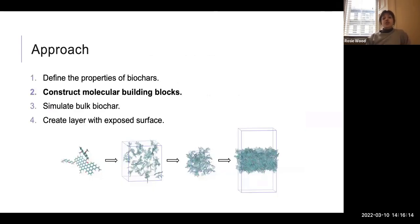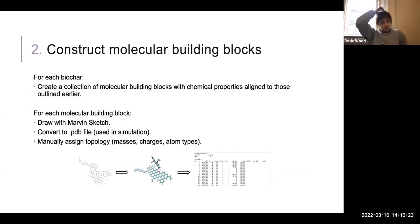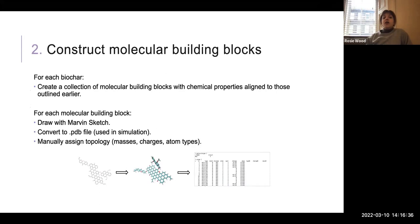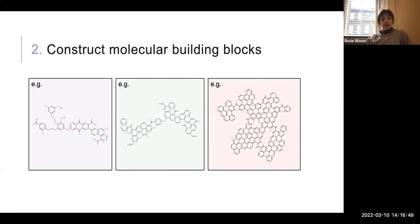The next thing I did was construct my molecular building blocks — essentially the molecules I'm using to make up my biochars. I did this manually, going through using chemical drawing software and drawing out molecules with properties aligned to those I've just shown. I then converted these molecules into a format I could use in a simulation and assigned my topology files for each of them. On the left is 400 degrees C, middle is 600, and right is 800. For the low highest treatment temperature biochars, we had lots of different functional groups, low aromaticity indices, and low aromatic domain sizes. For the high highest treatment temperature biochars, we had much higher aromatic domain sizes, higher aromaticity indices, and much fewer functional groups.